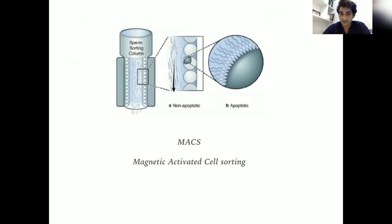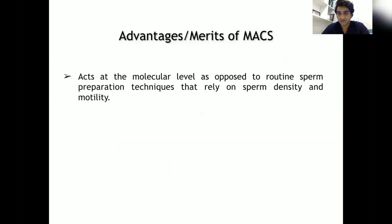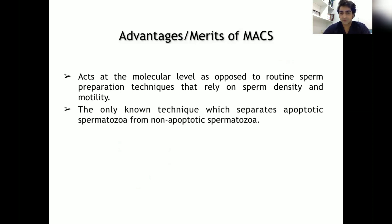If we don't want to be invasive, there is a method known as MACS — Magnetic Activated Cell Sorting. The main purpose of MACS is to separate apoptotic sperm from non-apoptotic ones. Apoptotic sperm attach to the magnetic field while non-apoptotic sperm pass through. The advantages of MACS are that it works on the molecular level as opposed to routine density gradient and swim-up, it is the only known method which can separate apoptotic from non-apoptotic sperm, and it is rapid, convenient, and non-invasive.